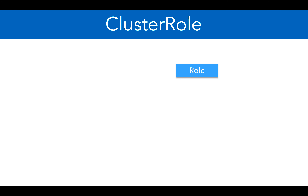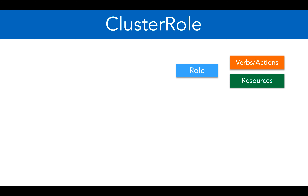We have seen what a role contains — verbs or actions, and the resources on which those verbs and actions should be applied. We then use role binding to allocate this role to a particular user.